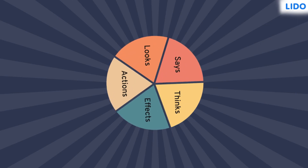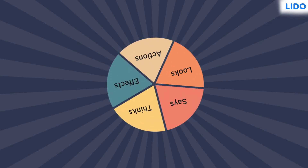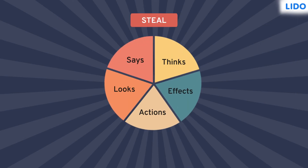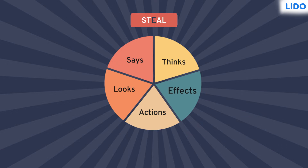There is a simple short form to understand characters in a story — it is STEEL. S stands for what the character says. T stands for what the character thinks. E stands for what effect the character has on other people. A stands for actions the character does. L stands for how the character looks.